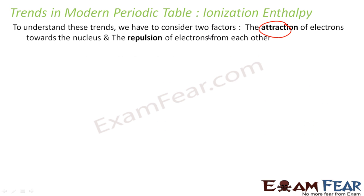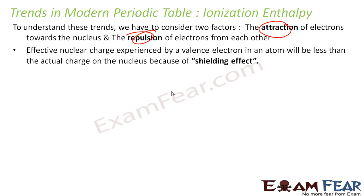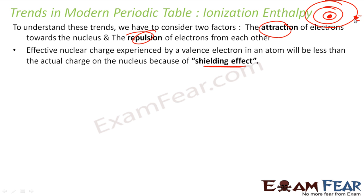Ionization enthalpy generally depends on the pin factor — that is the attraction of electrons towards the nucleus and the repulsion of electrons among each other. The shielding effect, as I told, generally if you go down the group, the shielding effect increases and the electrons are not that much attracted towards the nucleus, so they can easily be plucked out.